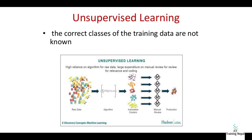In unsupervised learning, the classes of training data are not known. The algorithm reduces manual review for relevance and coding. It is automated — generating clusters.